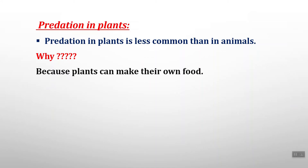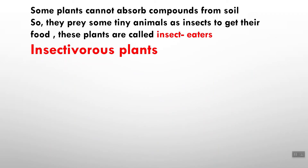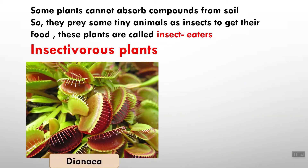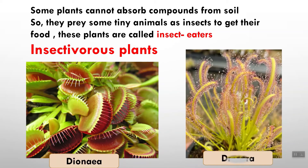Predation in plants is less common than in animals, because plants can make their own food. However, we can find predation in plants in insect-eating plants, called insectivorous plants. Two examples are the Dionaea and the Drosera. These plants cannot absorb sufficient compounds from the soil, so they trap tiny animals such as insects to absorb nutrients from their bodies.